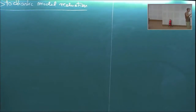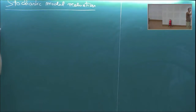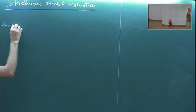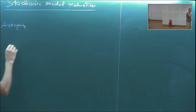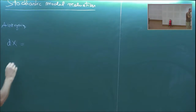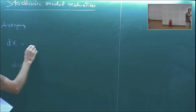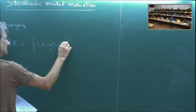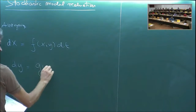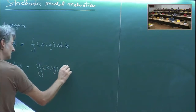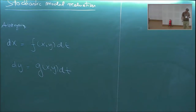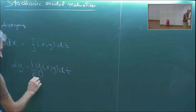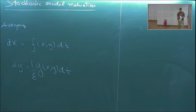Let's start with averaging and look at systems of the form: dx = f(x, y) dt, and dy = (1/ε) g(x, y) dt. With the 1/ε here, this is the case we've dealt with already — where we said this system supports some invariant measure. But let's now make this system stochastic.